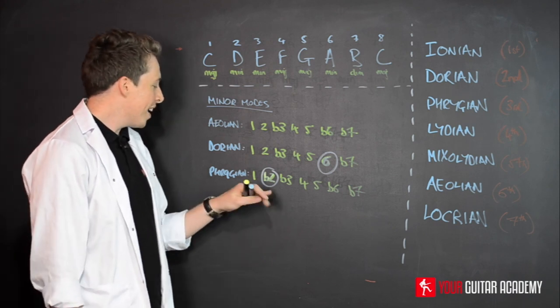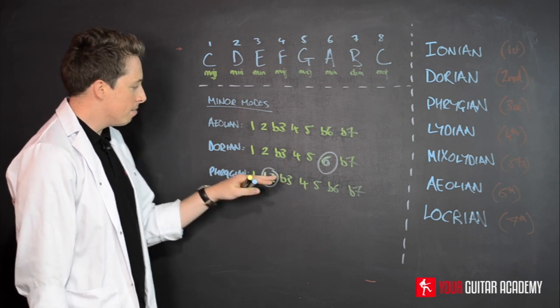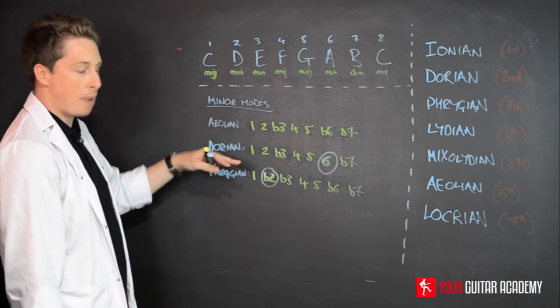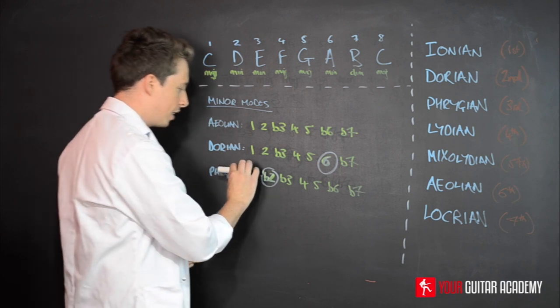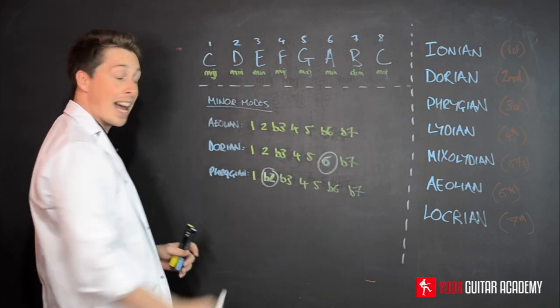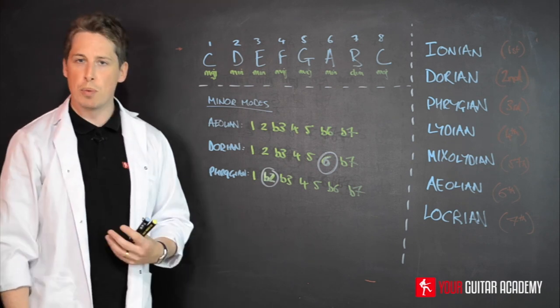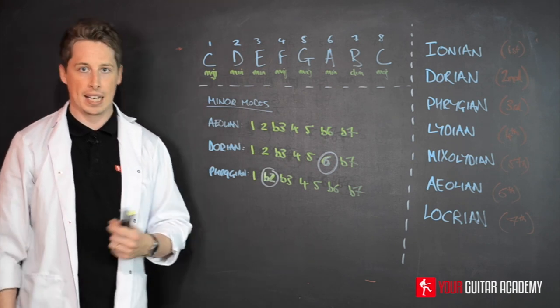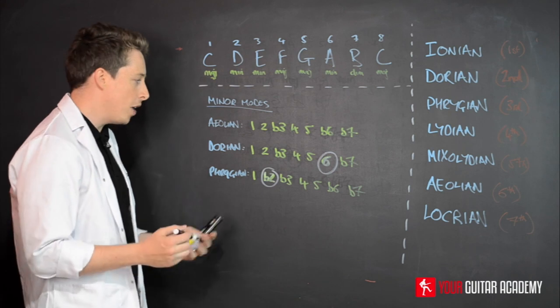So, again, by relating the mode to the correct parent, as it were, so, in my opinion, rather than relating Phrygian to Ionian, we relate Phrygian to the natural minor, you've got a usable version of the scale quickly. And, as a final point,